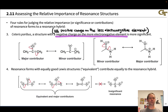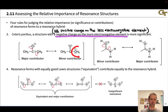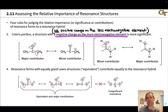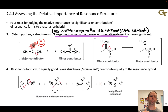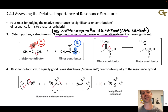Here we have two resonance forms: one has negative charge on an oxygen atom, one has negative charge on a carbon atom. This is an example of an allylic lone pair — a lone pair connected via a single bond to a carbon-carbon double bond. The major contributor has the negative charge on the more electronegative oxygen atom, where it's happier. The minor contributor has negative charge on the less electronegative carbon atom, because carbon is less electronegative than oxygen.